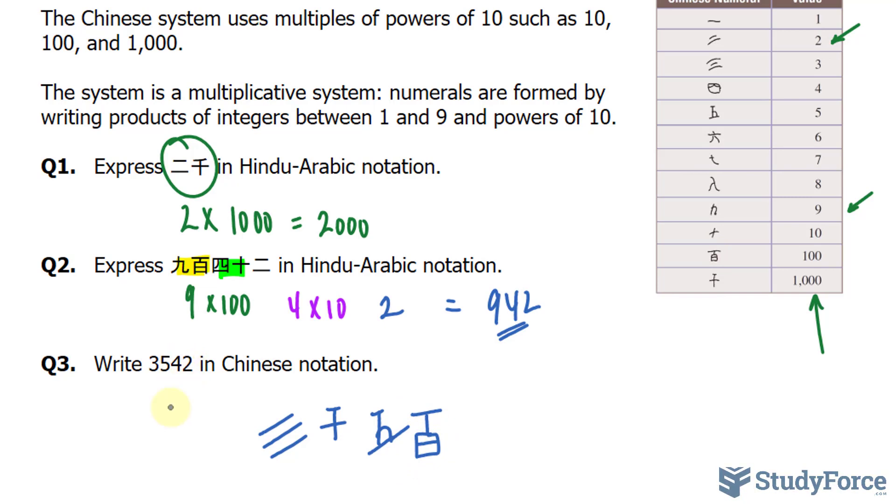Then we have 42. We need to represent 40, and that can be done by taking this symbol and multiplying it by 10. And finally, to represent this 2, we write down the symbol for 2. And there you have it.